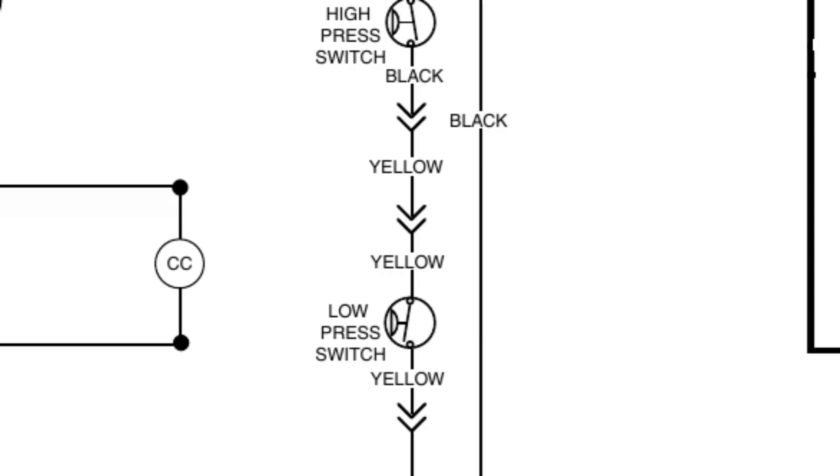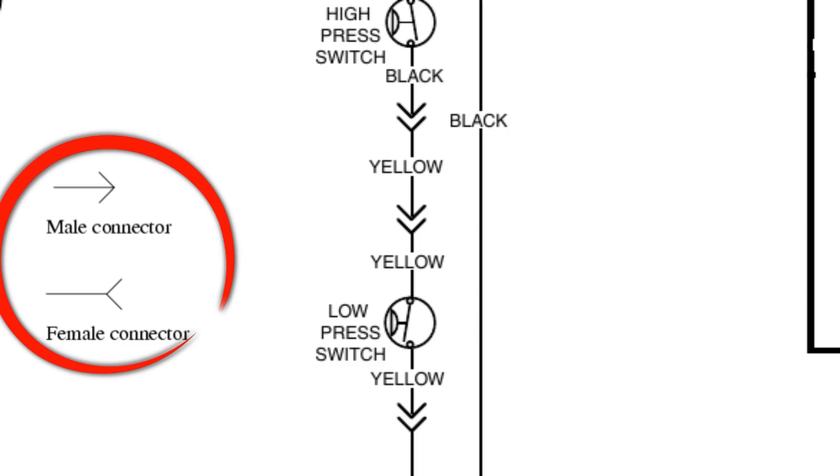Now you're also going to see what looks like arrows on schematics like we see right here. And these are not directional arrows. They're not telling you which way the electricity is flowing or anything like that. What these are, are male and female connectors. So think Molex plugs, things of that nature.